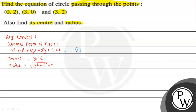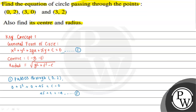This circle passes through the three points (0,2), (3,0), and (3,2). When equation 1 passes through point (0,2), we substitute x = 0 and y = 2 into the general equation: 0² + 2² + 0 + 4f + c = 0, which gives us 4f + c = -4. We consider this as equation 2.